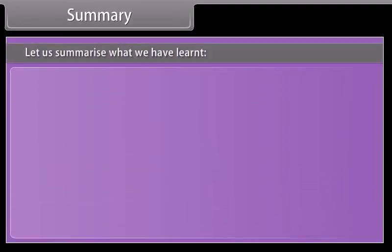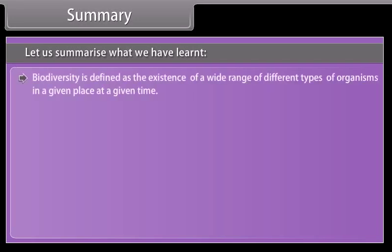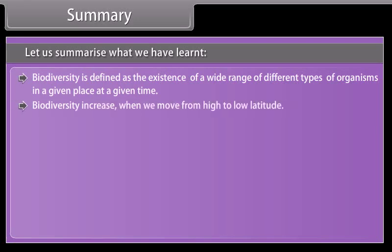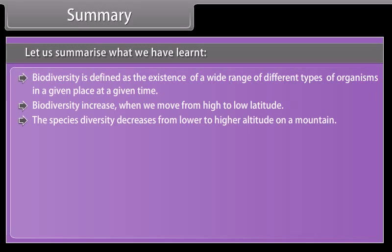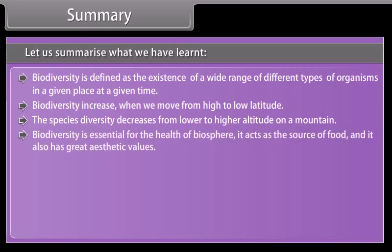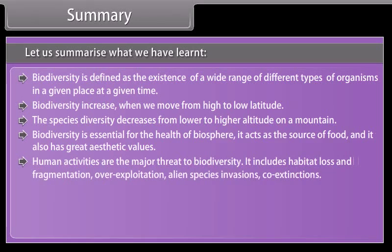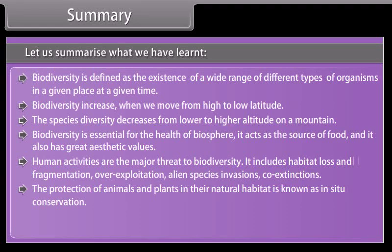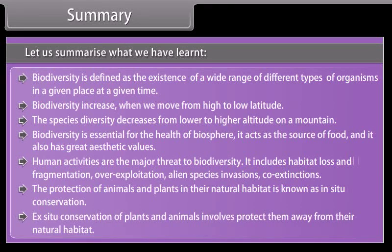Summary. Biodiversity is defined as the existence of a wide range of different types of organisms in a given place at a given time. Biodiversity increases when we move from high to low latitude. Species diversity decreases from lower to higher altitude on a mountain. Biodiversity is essential for the health of the biosphere; it acts as the source of food and has great aesthetic value. Human activities are the major threats, including habitat loss and fragmentation, over-exploitation, alien species invasions, and co-extinctions. In-situ conservation protects animals and plants in their natural habitat; ex-situ conservation protects them away from their natural habitat.